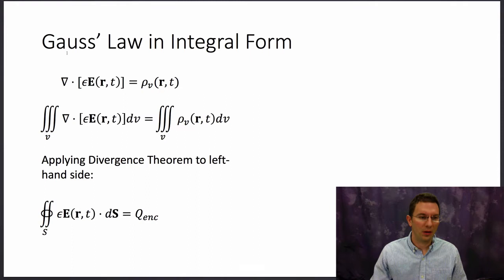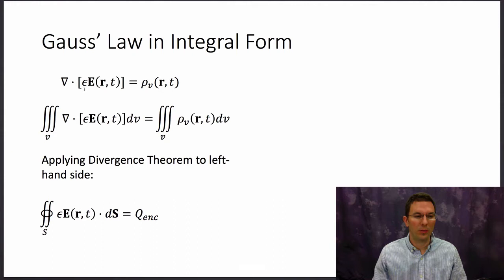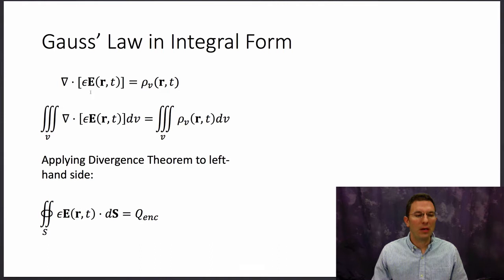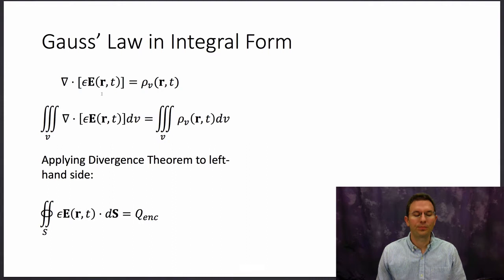Let's start with the differential form of Gauss's law that we've seen before. This is one of Maxwell's equations. What it is saying is that the divergence of this quantity — the permittivity epsilon times the electric field — is equal to the volume charge density that exists at that point in a region of space. This quantity, epsilon or the permittivity times the electric field, is also defined to be the electric flux density, D, capital D.